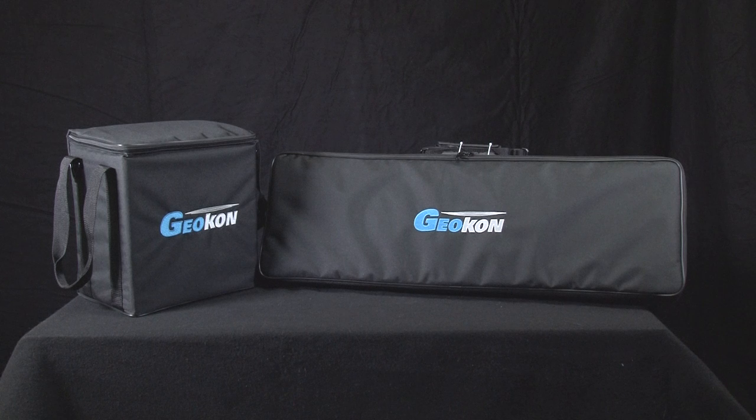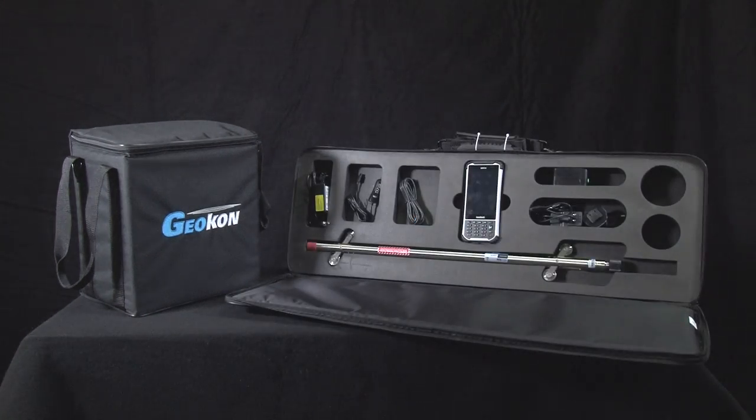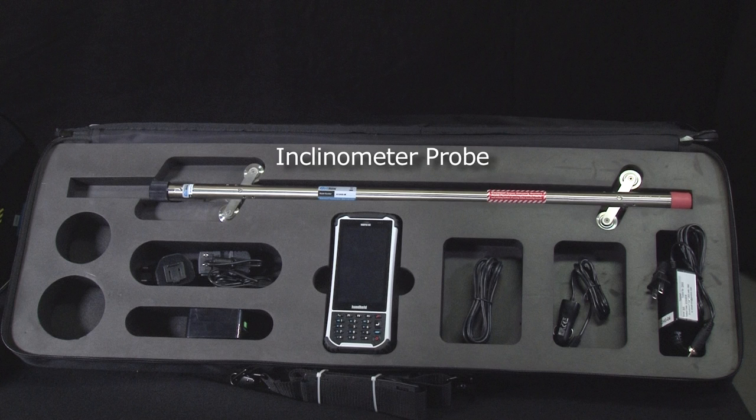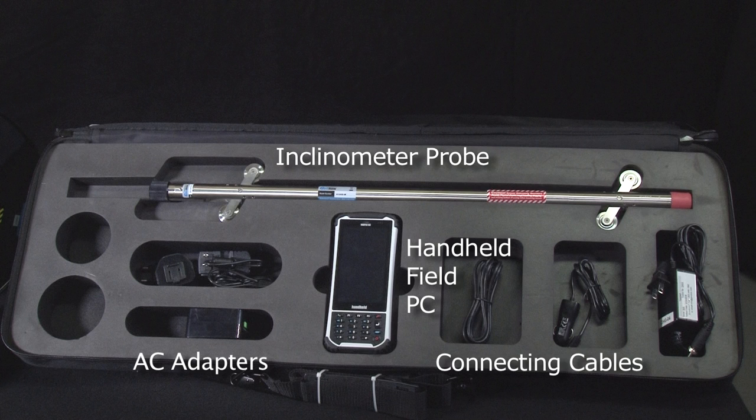The GK604 system comes packaged in field-worthy padded Cordura cases. Included in this case are the inclinometer probe, a handheld field PC, AC adapters, and connecting cables.